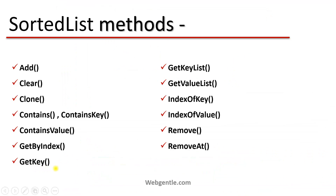Next is GetKey — GetKey is used to get a particular key from the sorted list based on the index. Next is GetKeyList — this method is used to get all the keys in sorted manner from the sorted list, returning only keys in sorted order. Next is GetValueList — this returns all the values from the sorted list in sorted manner. Next is IndexOfKey — if you know the key but not the index, pass that key and it returns the index. Next is IndexOfValue — similarly, pass the value and it returns the index of that value.